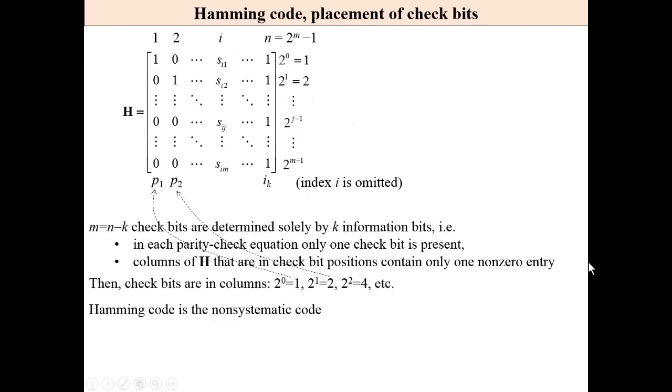Now, placement of check bits. We know from previous considerations that check bits are determined solely by the information bits, which means that in each parity check equation, only one check bit is present. And it means that columns of matrix H that are at the check bit positions contain only one non-zero entry. It is the first column, 2 to the power of 0, 2 to the power of 1, 4th, 8th and so on. Hamming code is the non-systematic code. This is the observation.